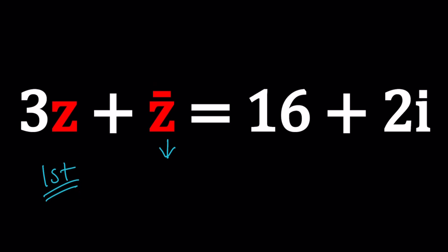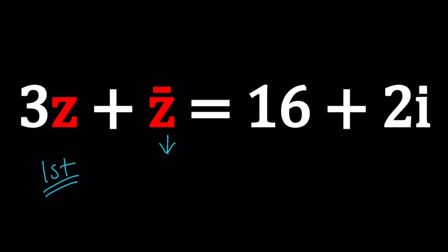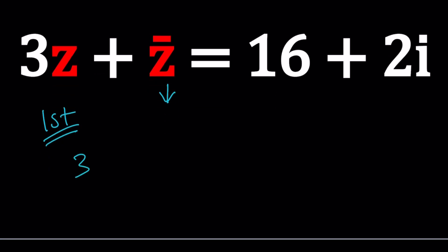Okay so allow me to start with the first and my first method is going to be the following. We have 3z plus z bar and that's equal to this. Let me rewrite the equation. Now we're going to go ahead and conjugate both sides. If two complex numbers like z1 and z2 are equal then their conjugates are also equal.